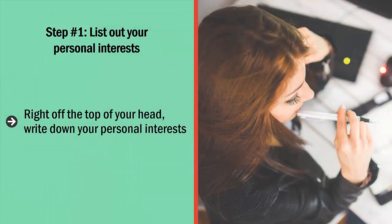Step 1: List out your personal interests. Right off the top of your head, write down your personal interests. These should be topics that you love talking about and are so interested in that you would talk about them even if you're not getting paid. Come up with a long list. As long as you're truly interested in these topics, write them down.